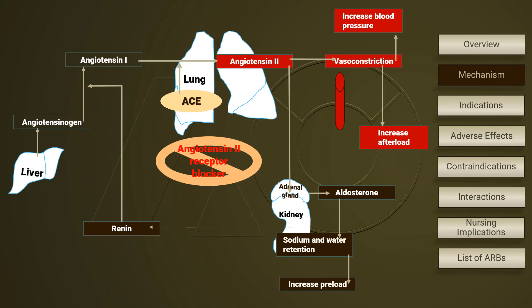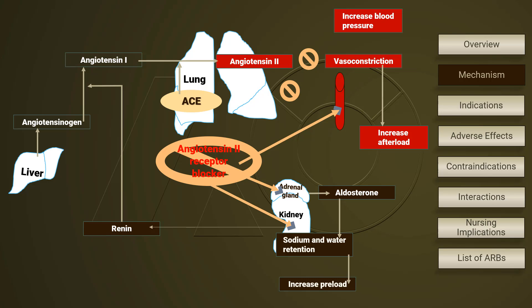ARBs compete with angiotensin-2 to bind on the receptors at the target cells. They antagonize the type 1 receptors for angiotensin-2. Type 1 receptors of angiotensin-2 are mostly found on smooth muscles in blood vessels and organs like the uterus, bladder, and kidneys. These receptors can also be found in endocrine glands as well as presynaptic nerve terminals. Because ARBs bind on where angiotensin-2 targets, their blocking effects compared to ACE inhibitors are more comprehensive.